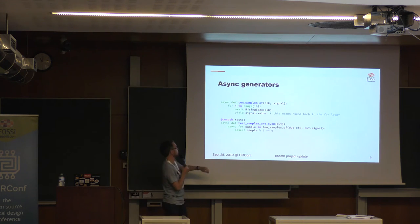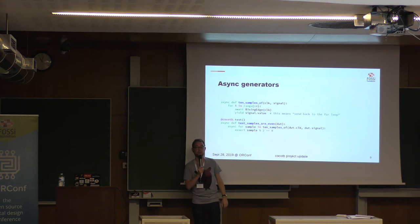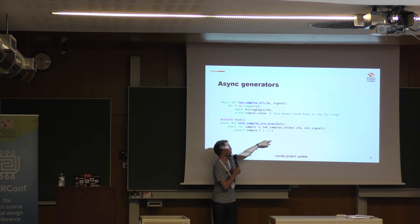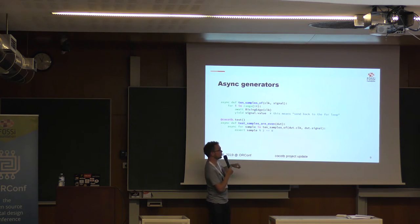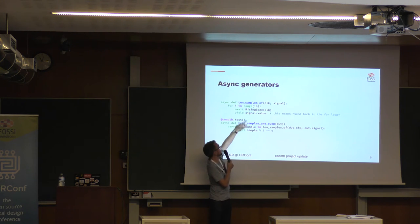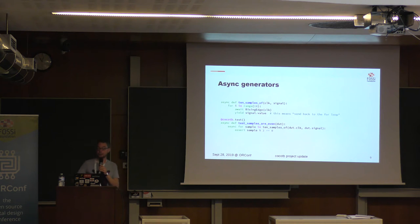You can also have async generators. Here's an example: we want to get 10 samples of a signal that are even, so we have our device under test. For those who haven't seen CocoTB, this is a test case that gets passed a device under test referencing the model you're simulating. We wait for a rising edge — a clock cycle — and return the signal value back to the loop, then check that it's even. You can use these generators; they're interesting language features that make your life easier in some cases, but you don't have to — everything that worked before still works.